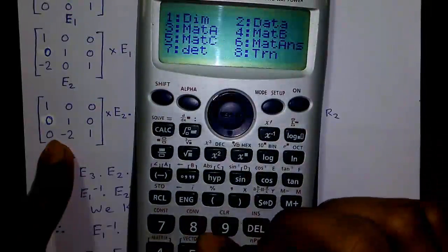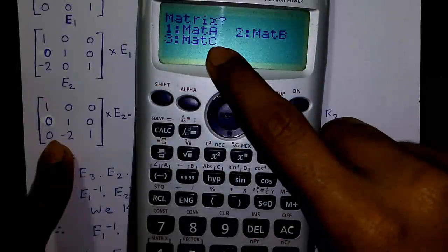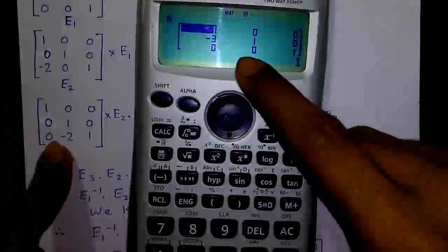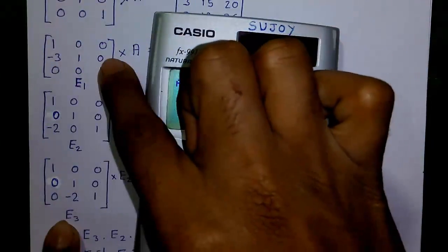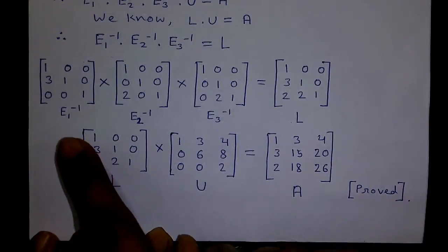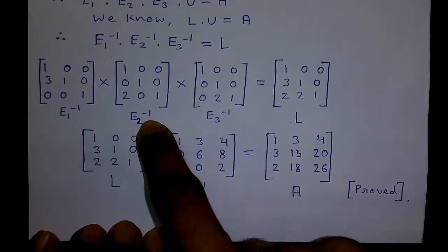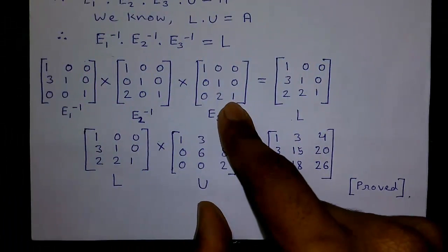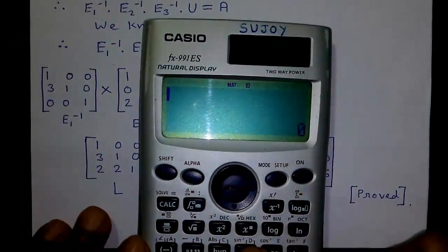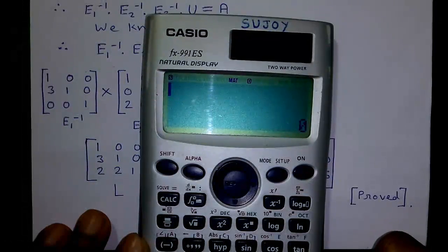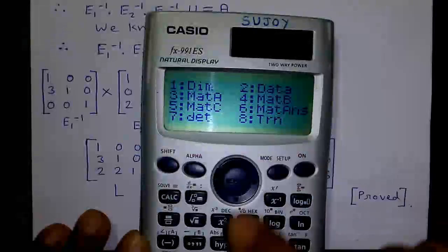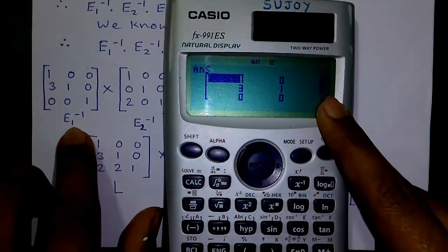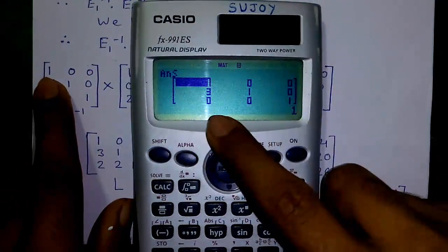You can verify the entered matrices by pressing Shift 4, 2 for data, then 1, 2, or 3 for matrix A, B, or C. Verifying matrix A: it shows 1, 0, 0; −3, 1, 0; 0, 0, 1 — which matches E1. Now we will find the inverses of E1 (matrix A), E2 (matrix B), and E3 (matrix C), and then multiply them together to get L.